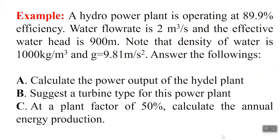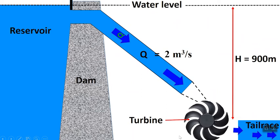I am going to work out one example here. A hydropower plant is operating at an efficiency of 89.9%. The water flow rate is 2 cubic meters per second and the effective water head is 900 meters. Part A: calculate the power output of the hydropower plant. Part B: suggest a turbine type for this power plant. Part C: at a plant factor of 50%, calculate the annual energy production. So, Q is 2 cubic meters per second and H is 900 meters.